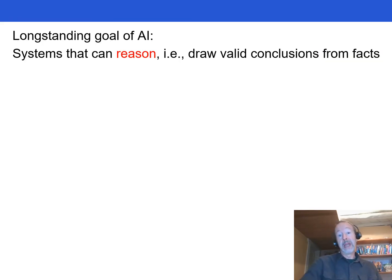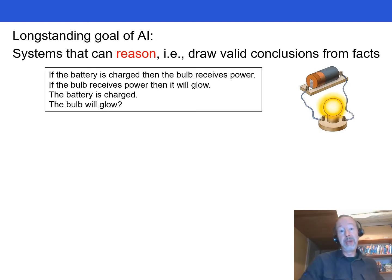It's been a long-standing goal of AI to build systems that can reason, in other words, draw valid conclusions given some facts and rules, but formal logic has proved hard to work with. Last year, in a system called RuleTaker, we showed that transformers can be trained to do this by reasoning directly with natural language.